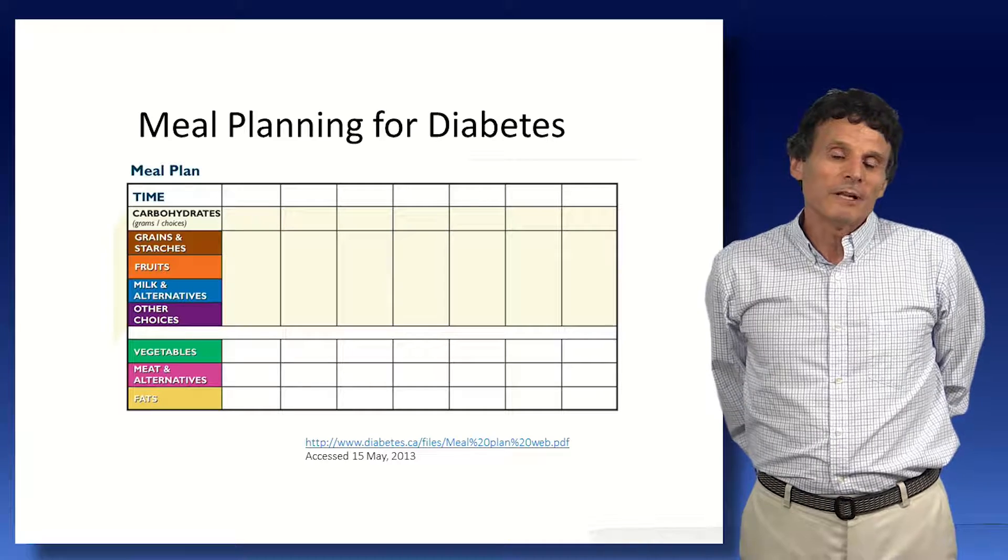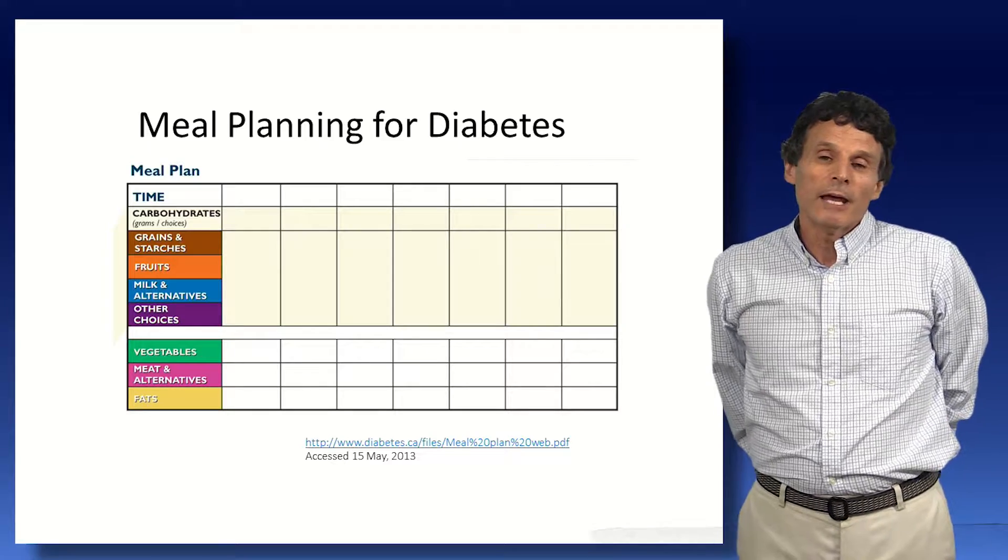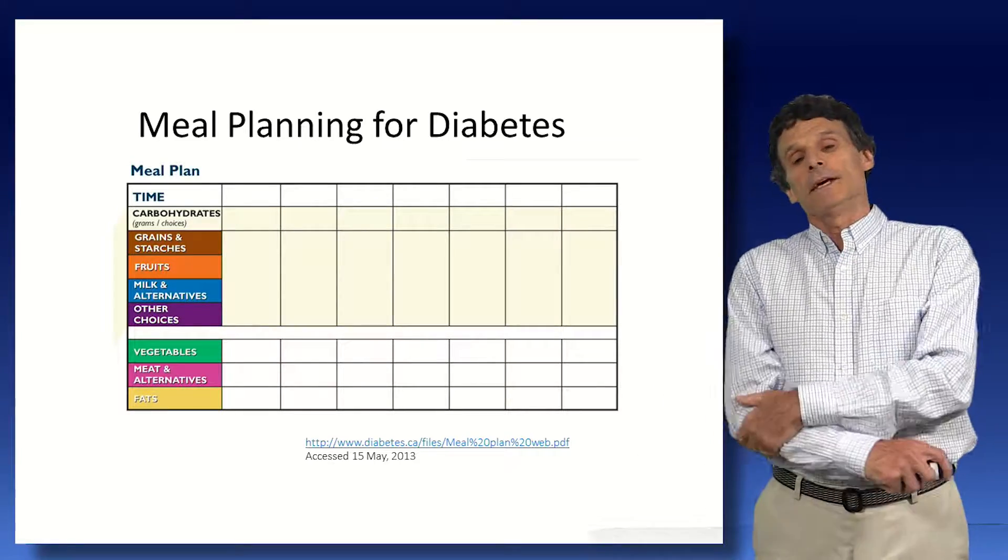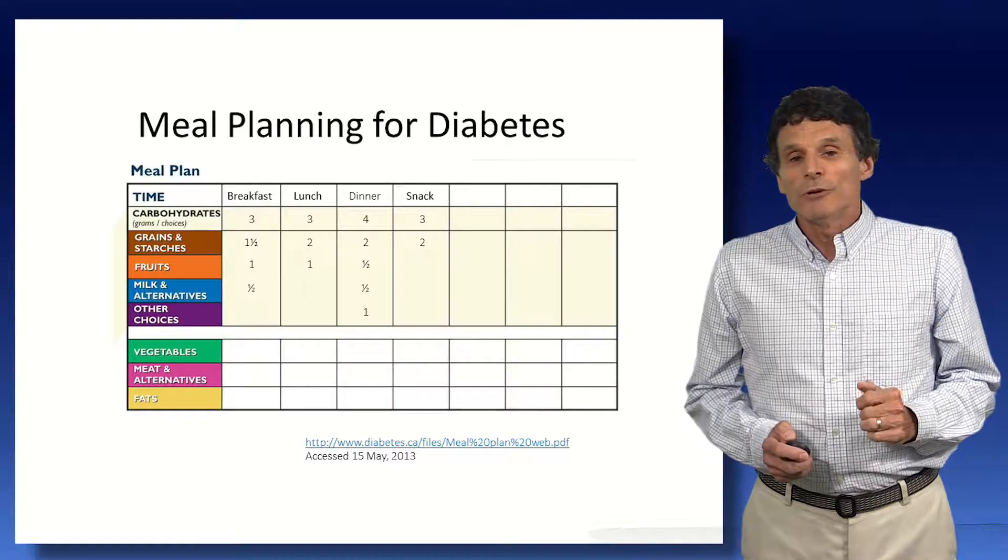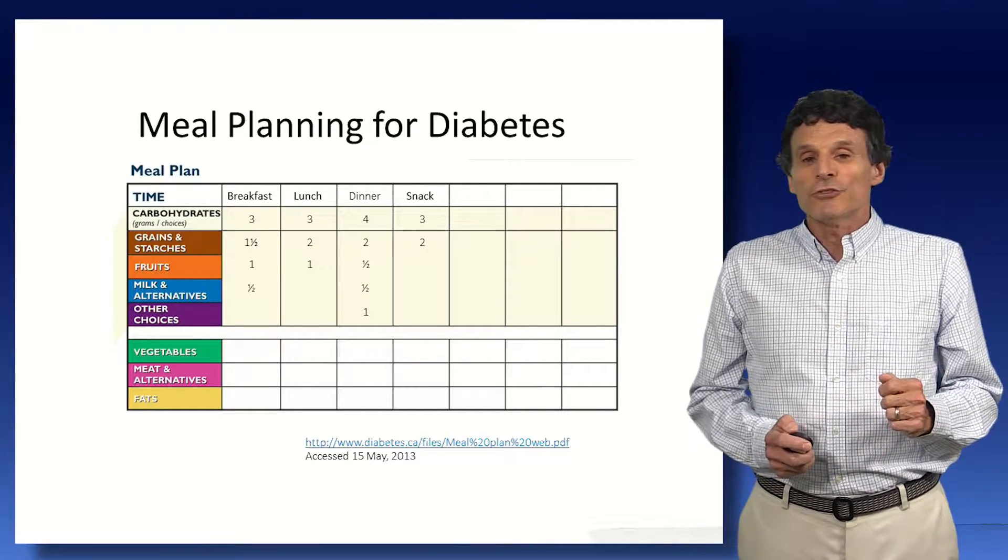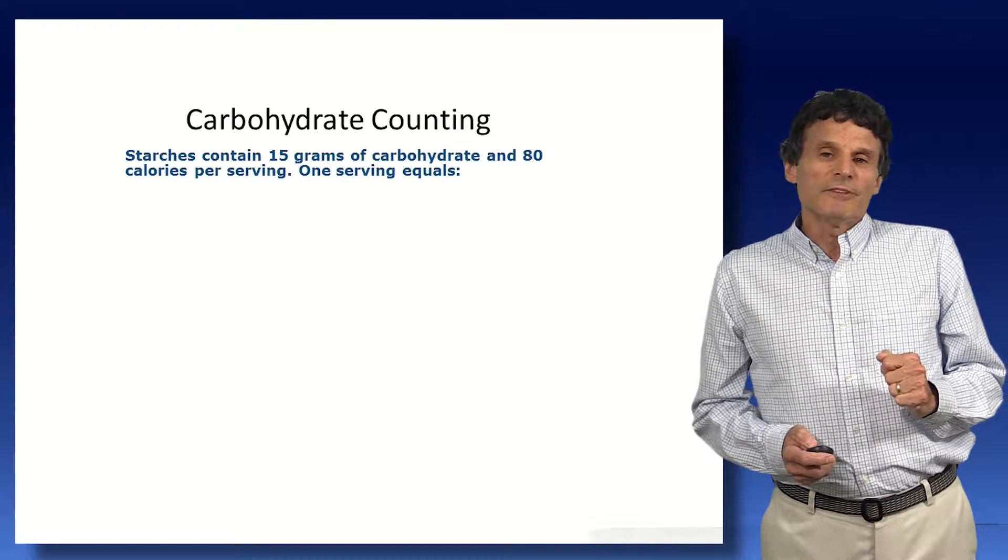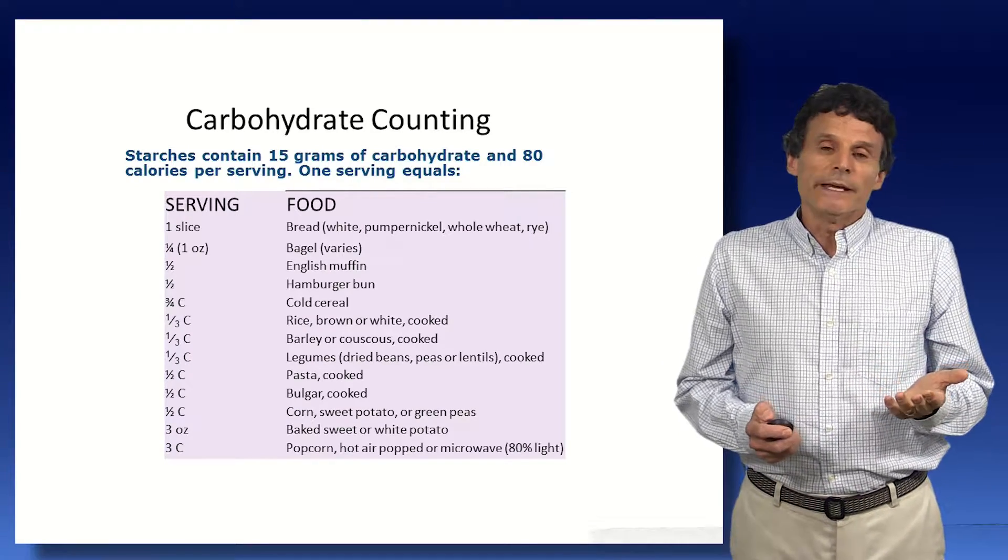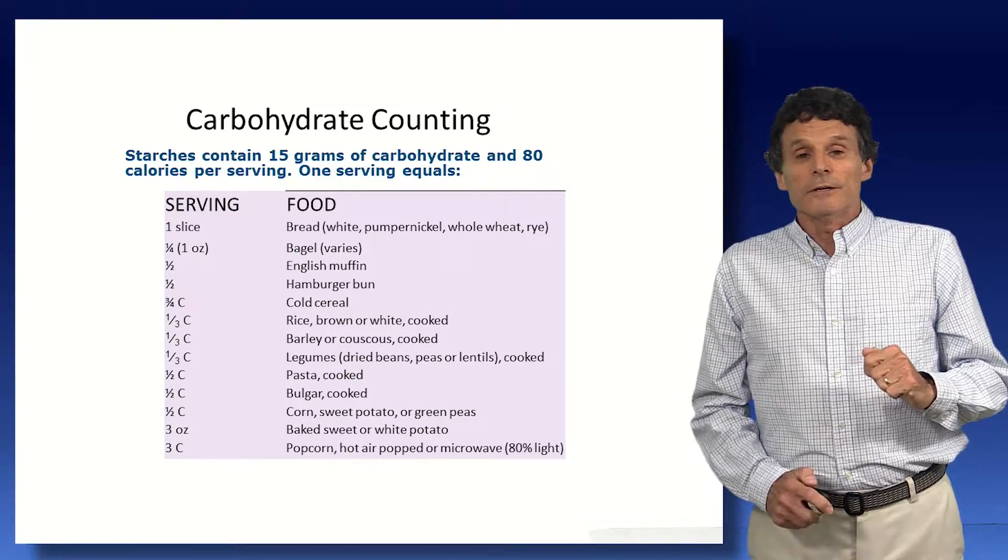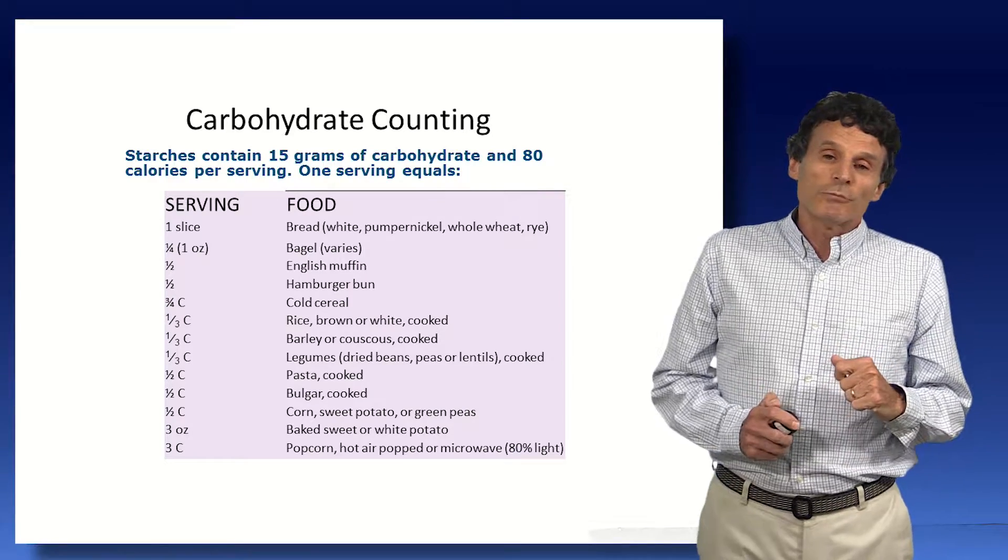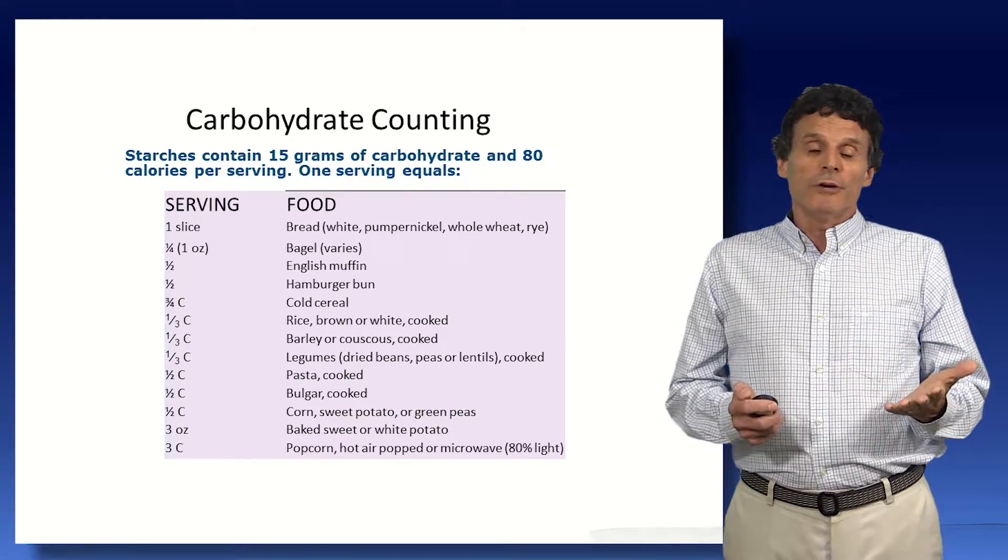The impetus for thinking about the glycemic index came from a desire to improve the dietary management of diabetes, and for nearly a century meal planning in diabetes has been associated or planned around carbohydrate counting. So the dietitian will review the person's diet record and will prescribe a certain number of exchanges of carbohydrate for every meal. And these exchanges in Canada contain 15 grams of carbohydrate. The concept or the implication is that 15 grams of carbohydrate from different foods will have the same effect on the metabolism of the body. And that was a question we wanted to ask. Would an equivalent amount of carbohydrate from different foods have the same effect on blood glucose or not?